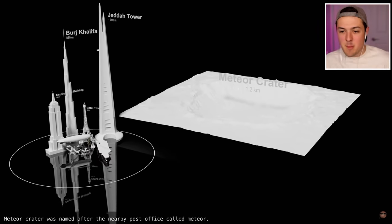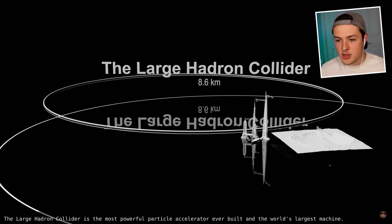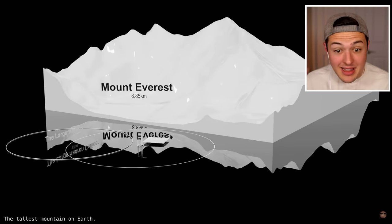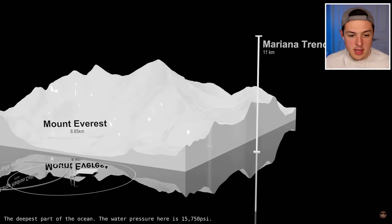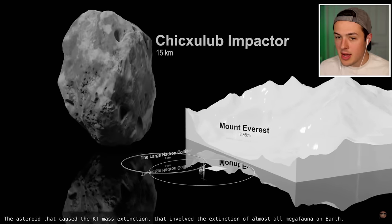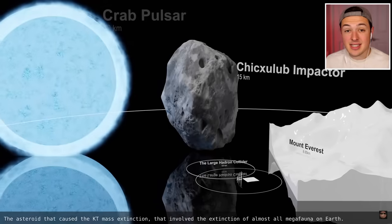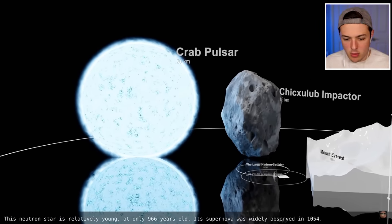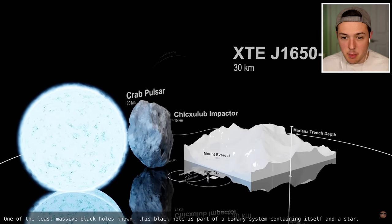Alright, we're moving into actual space stuff. There's a meteor crater, 1.2 kilometers deep. The Large Hadron Collider. A particle accelerator? They built that thing? That is huge! The tallest mountain on Earth is Mount Everest. But it's nowhere near as big as the Mariana Trench. Chicxulub. That's what caused the mass extinction of the dinosaurs, I'm pretty sure.